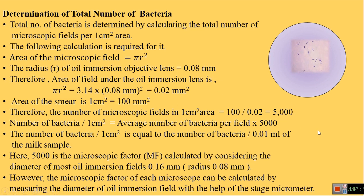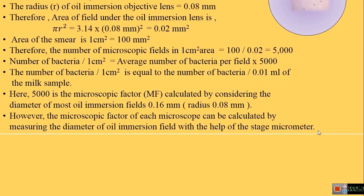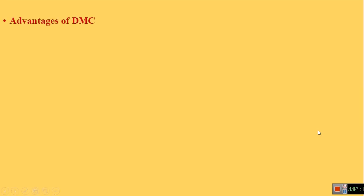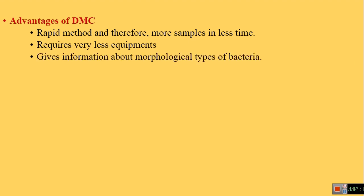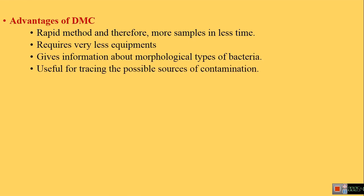The advantages of the Direct Microscopic Count method are: it is the most rapid method, so more samples can be examined in less time; it requires very little equipment; and it gives information about the morphological types of bacteria, which is useful for tracing the possible sources of contamination of milk.